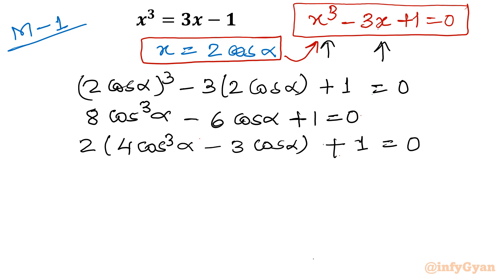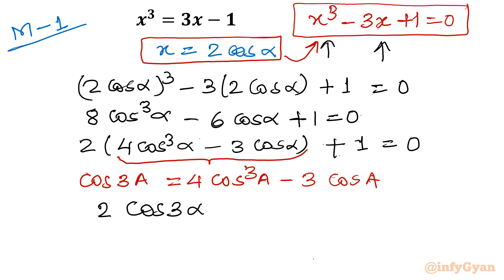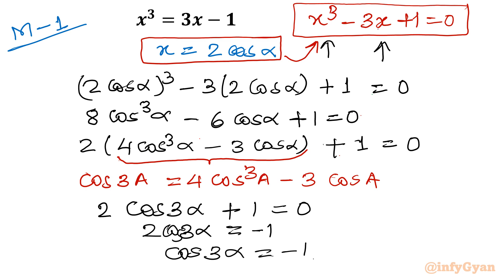Now an identity is about to come into play. The formula is: cos(3α) = 4cos³α - 3cos α. Applying this identity, I can write 2·cos(3α) + 1 = 0. Taking 1 to the other side: 2cos(3α) = -1. Dividing both sides by 2: cos(3α) = -1/2.